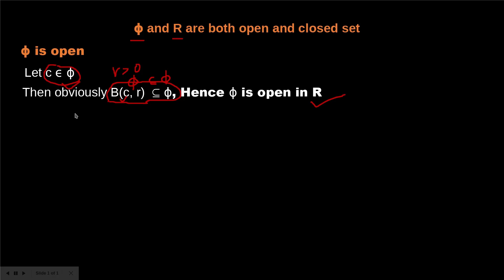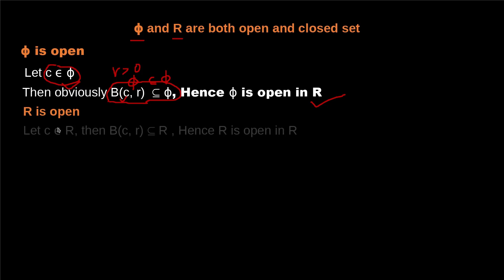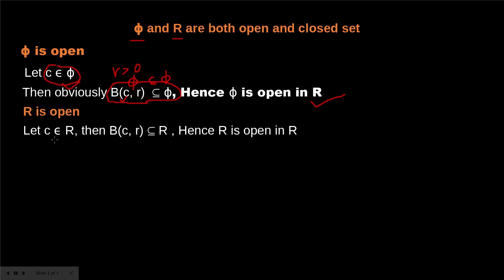Next, we'll show that ℝ is an open set. We suppose C to be an element of the set ℝ, that is, a real number. It is obvious that the open ball with center C and radius R is a subset of ℝ. For any radius R greater than 0, this open ball always lies inside ℝ, since ℝ includes all finite numbers and intervals.